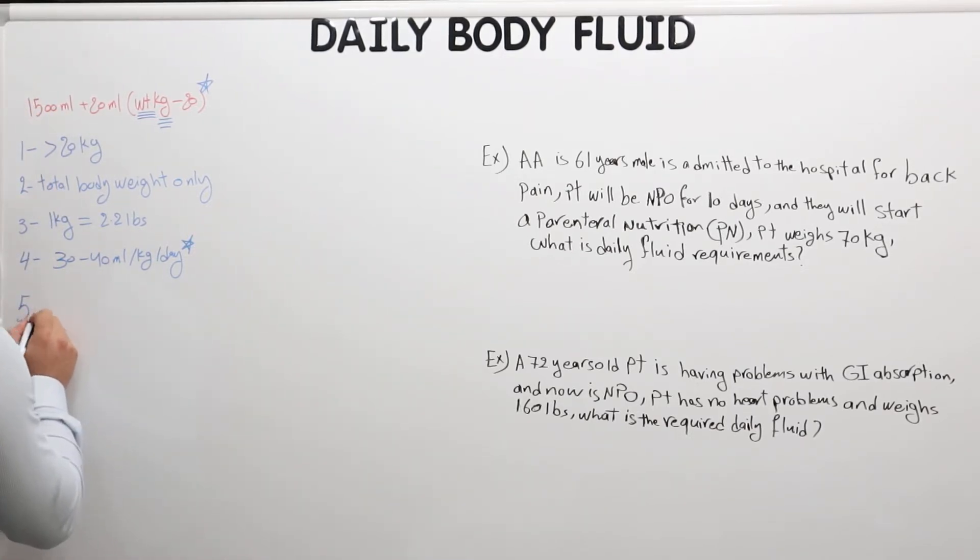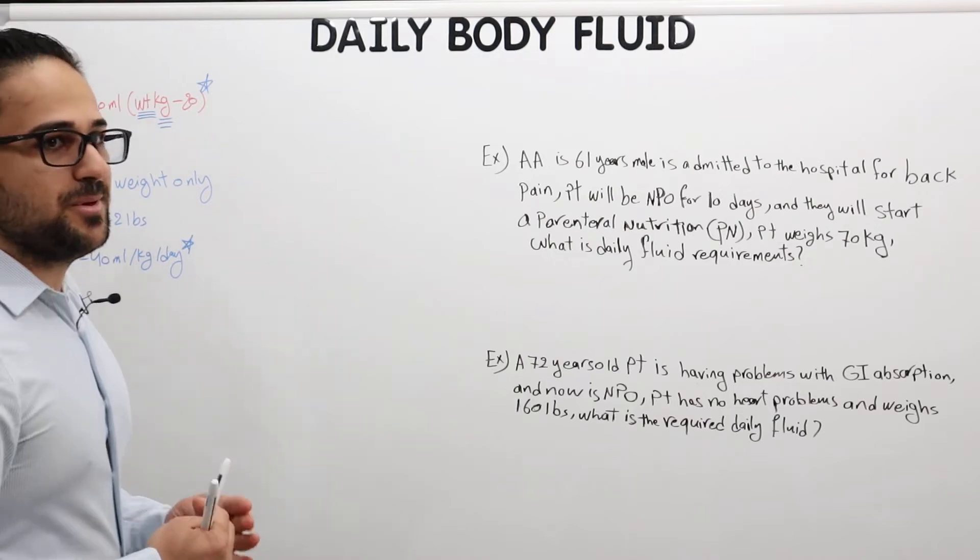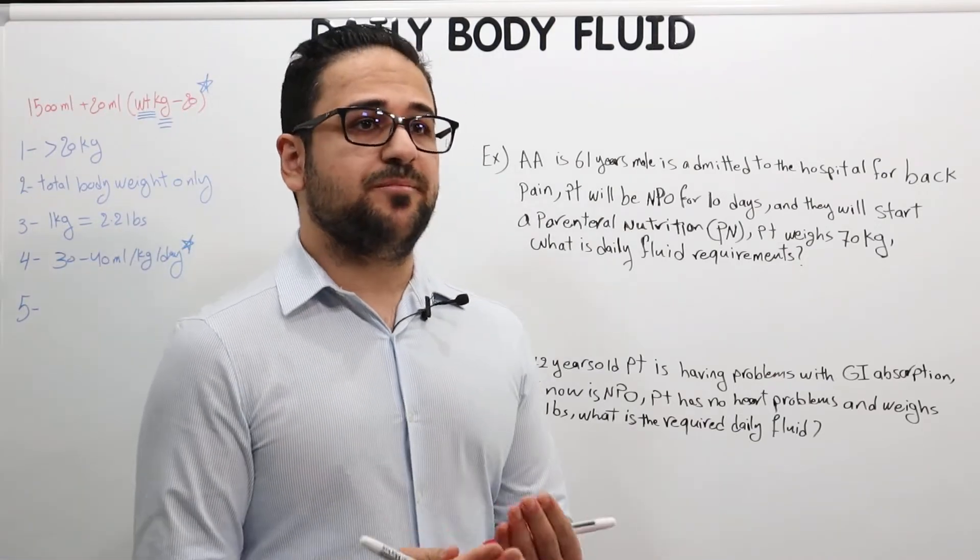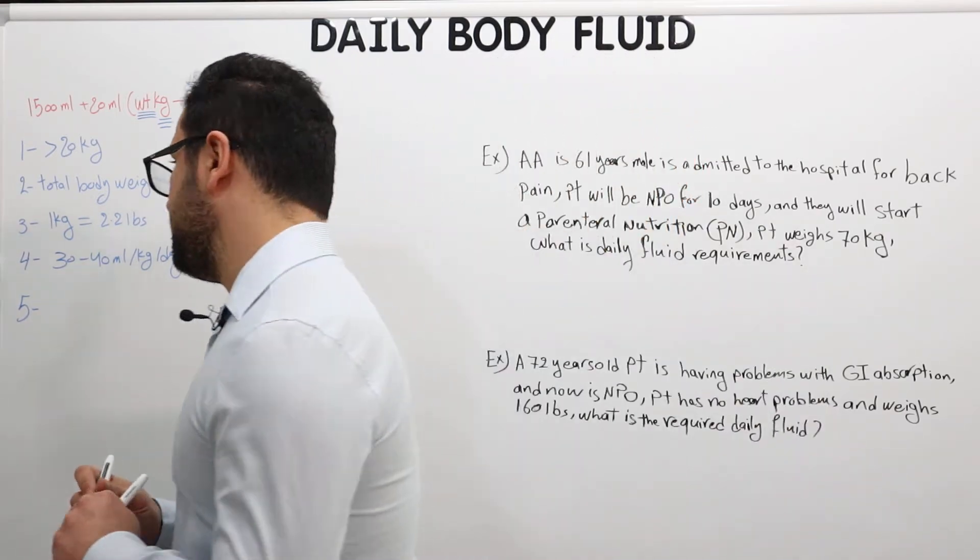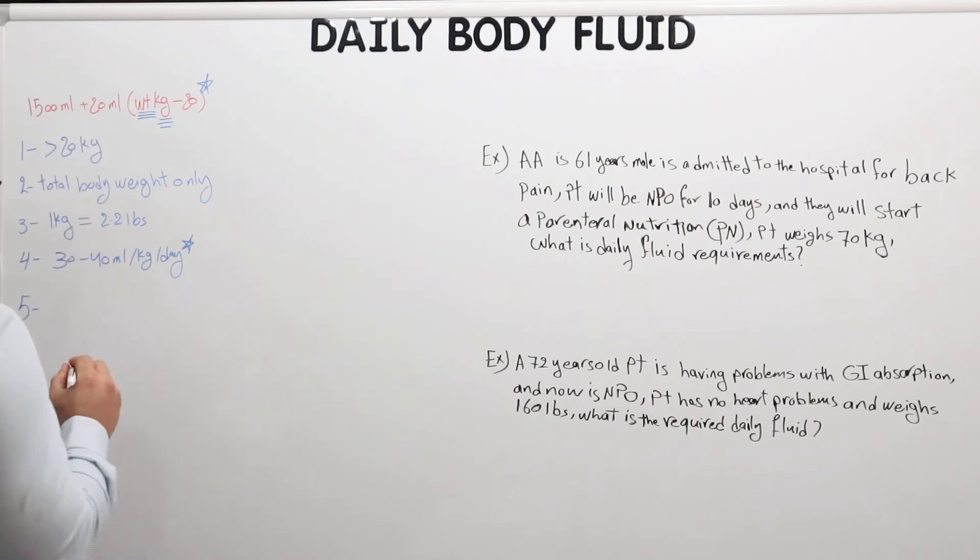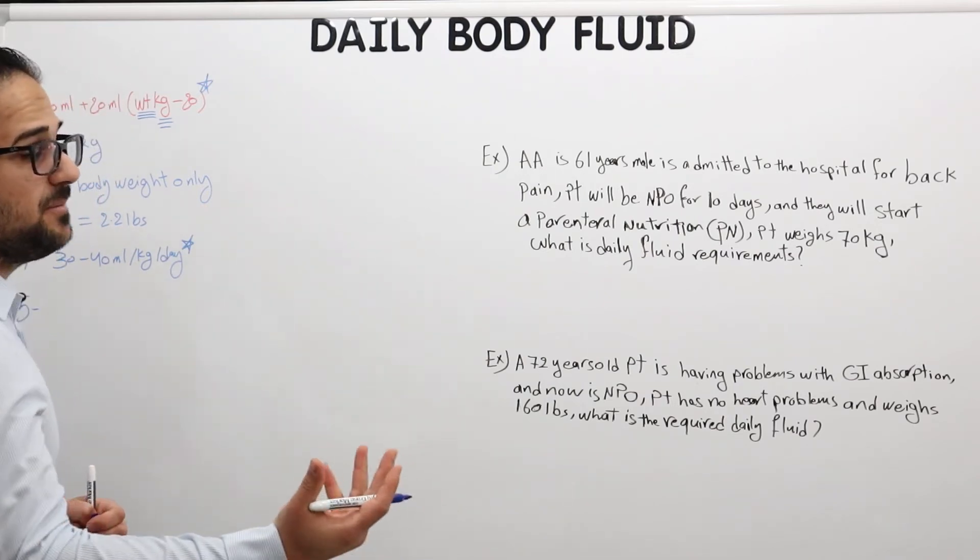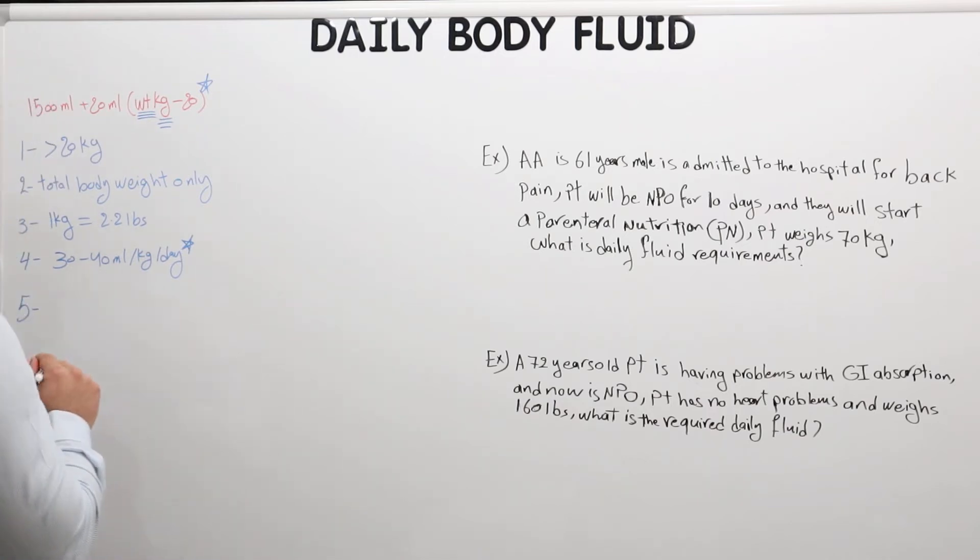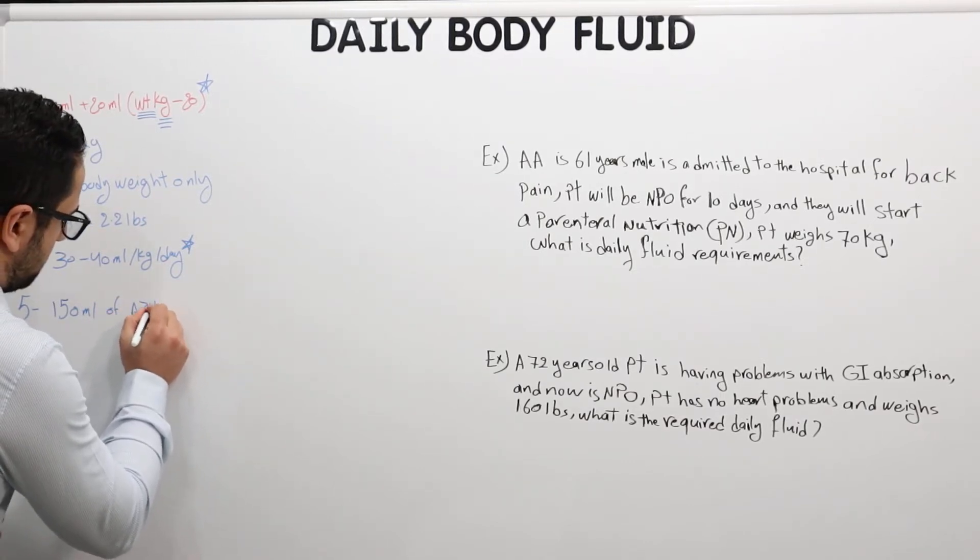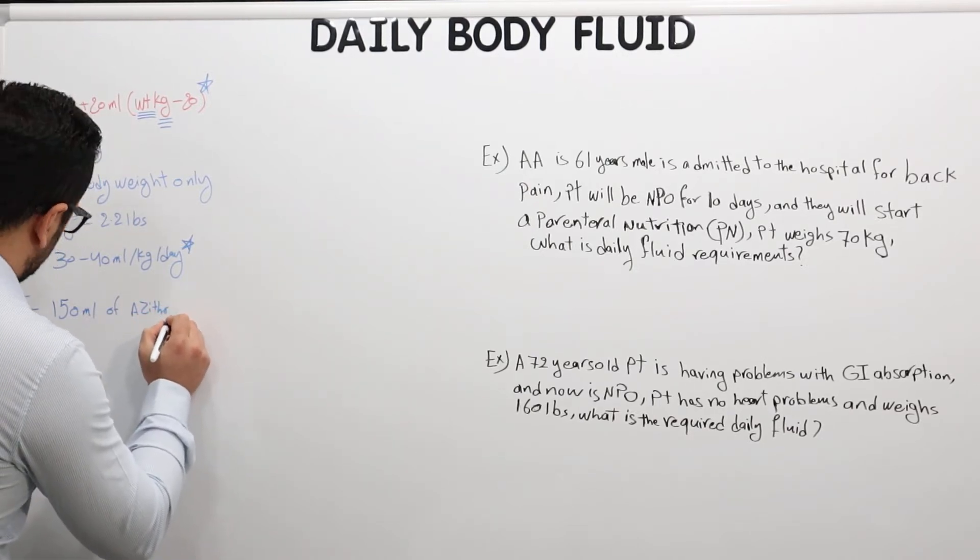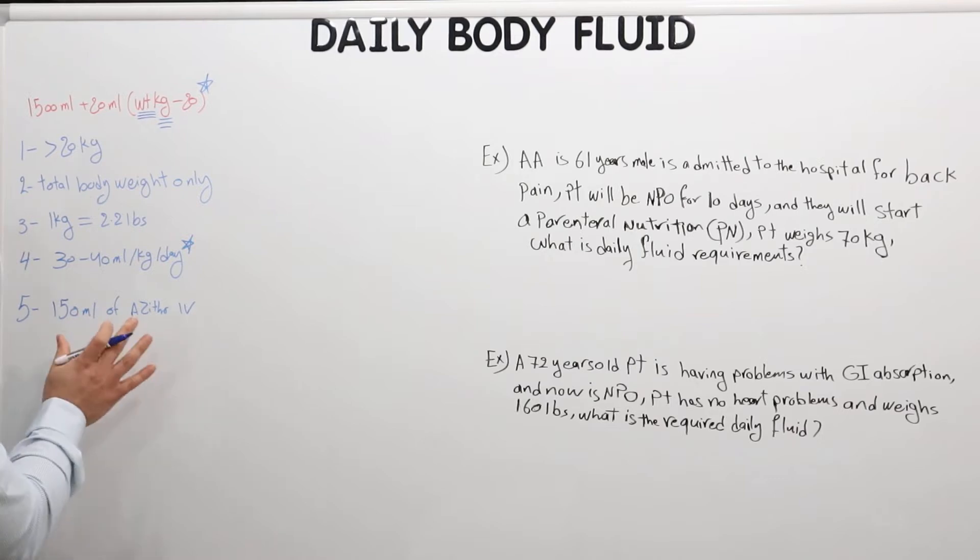Number five: when you calculate the total daily volume for a patient, you should include and consider all the medication the patient is receiving. Let's take an example. If we're having a patient that is taking azithromycin, and it comes in an IV piggyback 500 milligram azithromycin, the patient is receiving 150 milliliters of azithromycin.